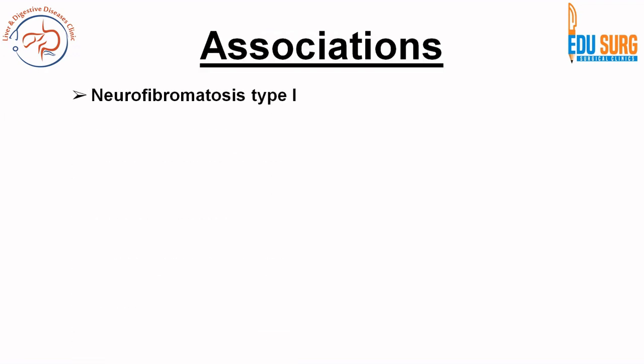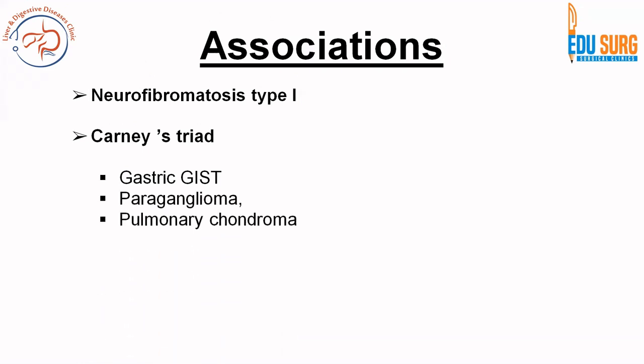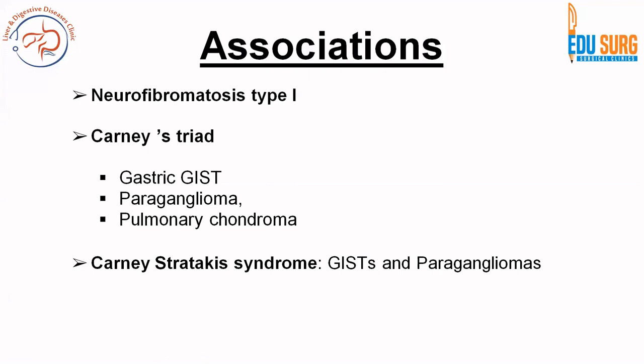Regarding associations with other syndromes, GIST is associated with neurofibromatosis type 1, Carney triad — which consists of gastric GIST, paraganglioma, and pulmonary chondroma — and Carney-Stratakis syndrome, which consists of GIST and paraganglioma. These are commonly asked MCQ topics, so remember these points as well.